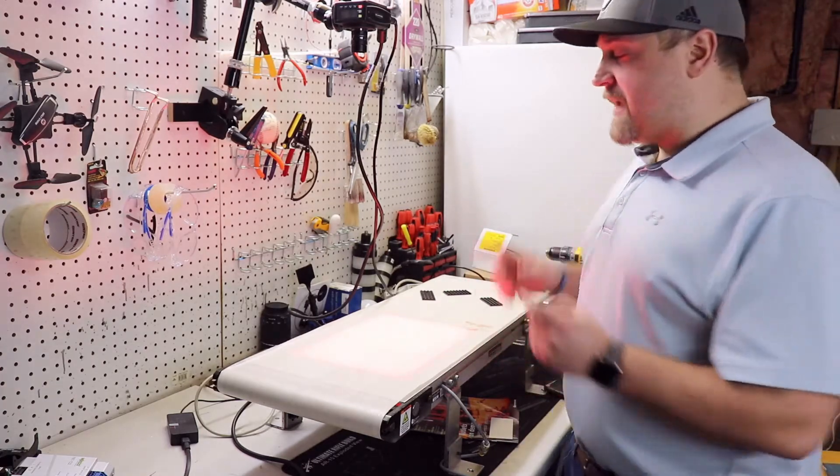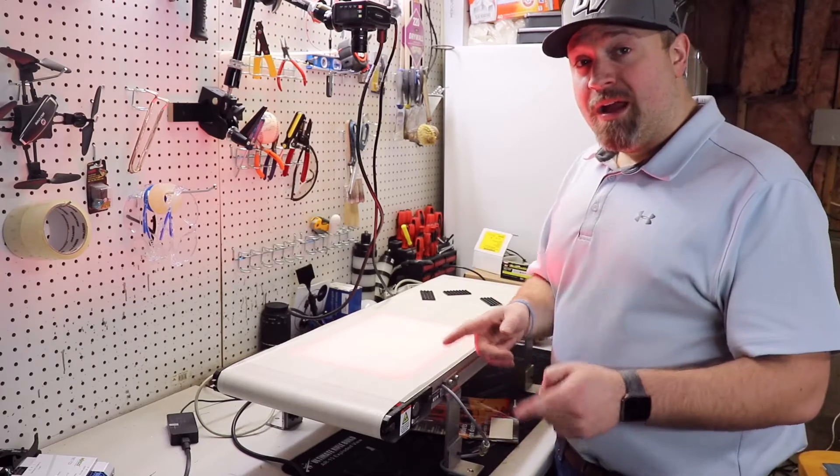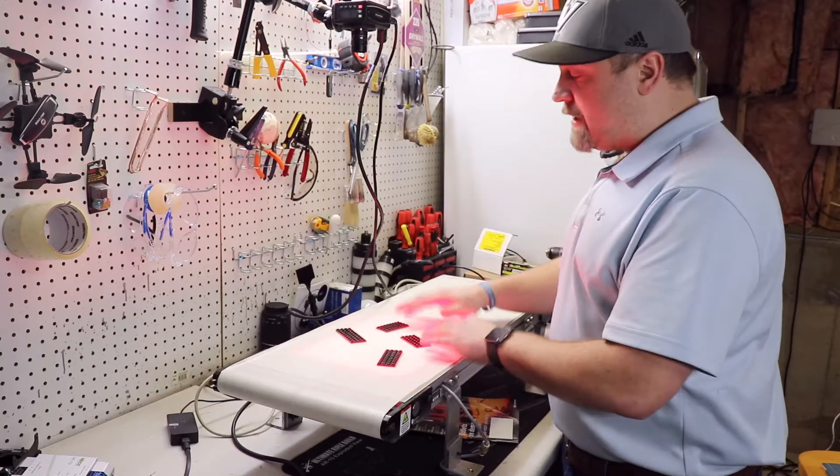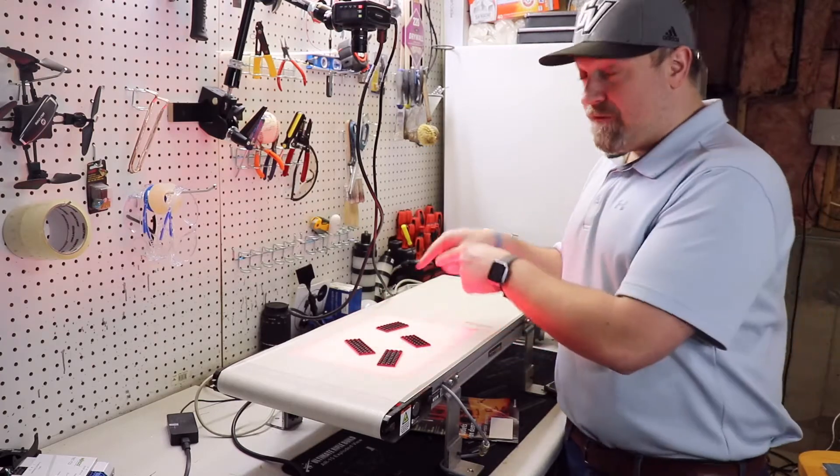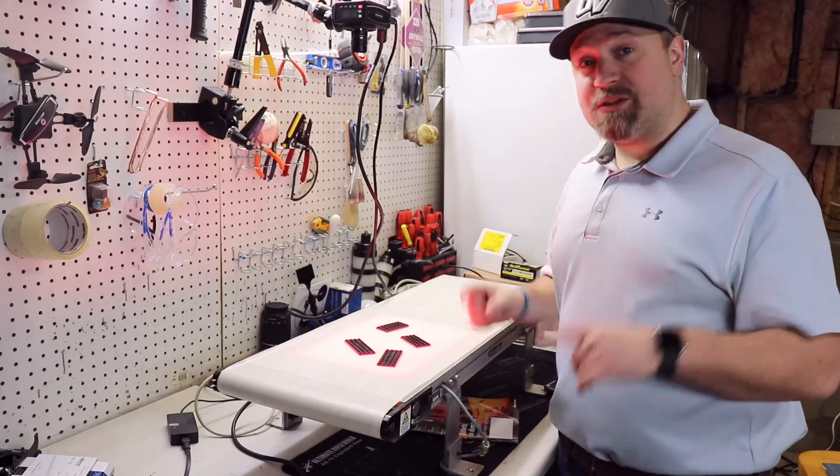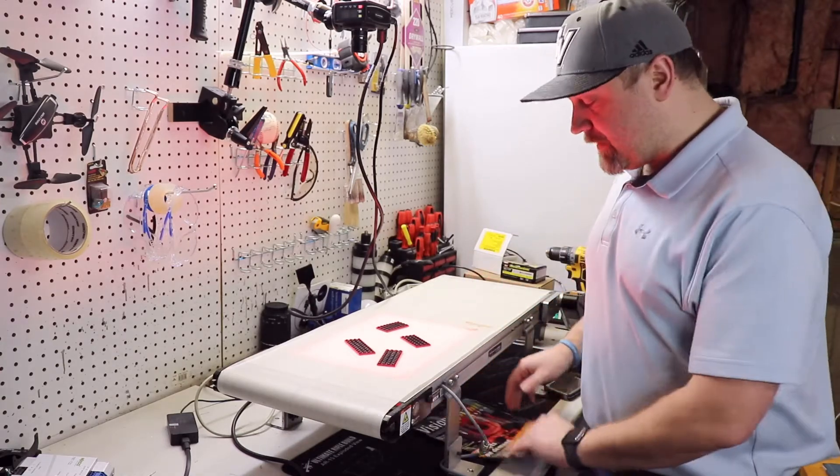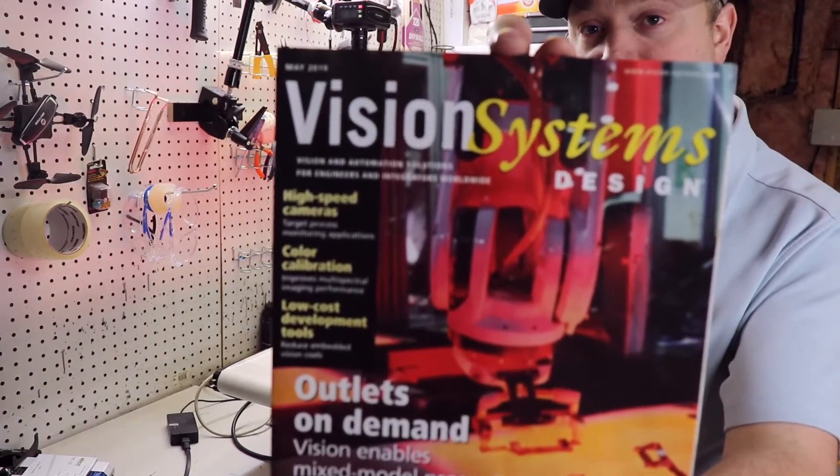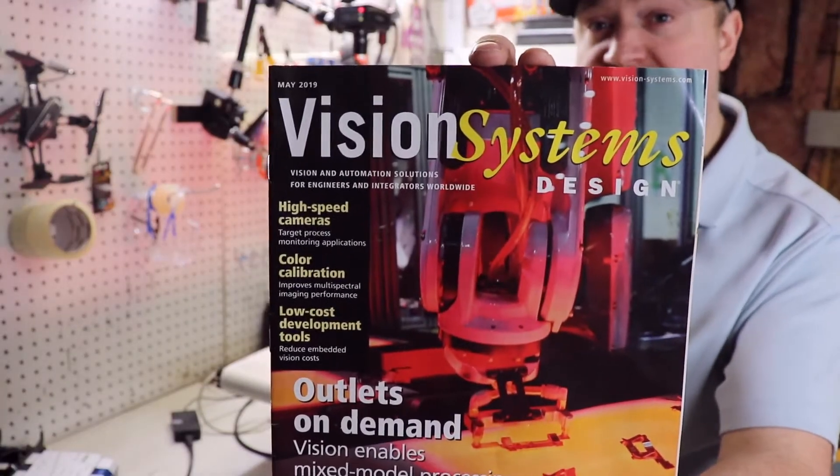But what's also really cool is I can use this conveyor now as a part filter. As the parts move down it, I can look for a specific part. Once I find that part and its position and orientation, I can then communicate to a robot to have that part be picked up. That's exactly what we did last year and we got our project on the front cover of Vision Systems Design Magazine.